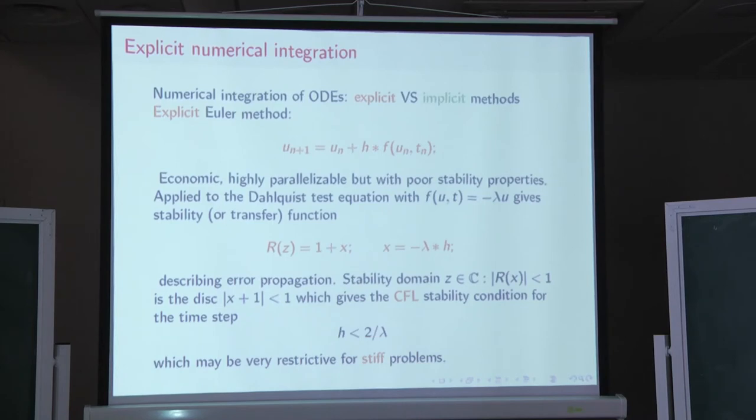Lambda is, again, the eigenvalue of the matrix, of Jacobian matrix evaluated at a solution. And this restriction may be very strict, really, because once the right-hand side of the equation comes from discretization of partial differential equation, it may happen that this lambda is extremely large.